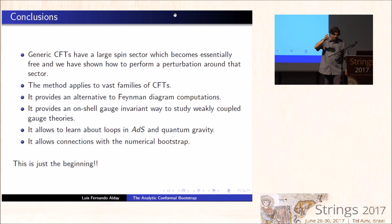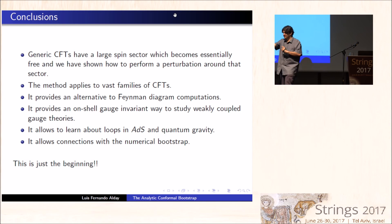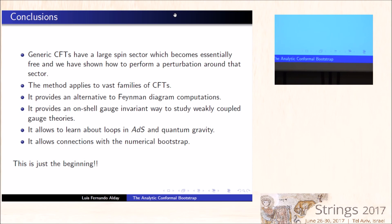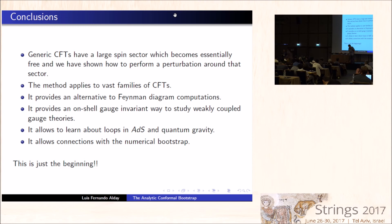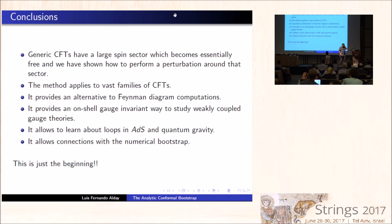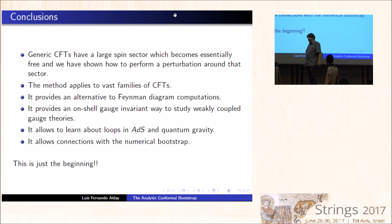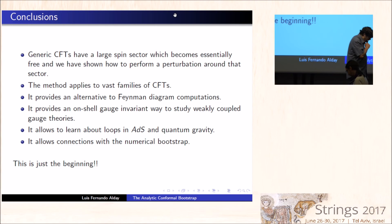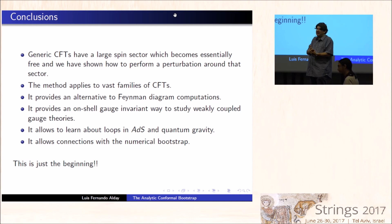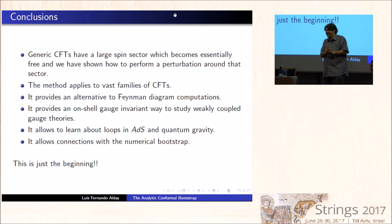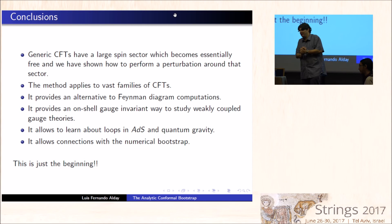Question: Can the same techniques used to compute tree-level and loop correlators in AdS be used to compute correlators in de Sitter? That would be very interesting. In this case, the relevant CFT will not be unitary. One important point about these analytic approaches is that we don't need the CFT to be unitary, so in principle we don't have that obstacle. I would answer yes, but I haven't sat down and tried to do it — I don't see any clear obstacles except I would have to learn a lot. In principle the lack of unitarity is not an obstacle.